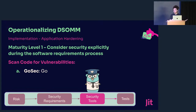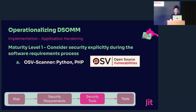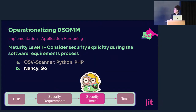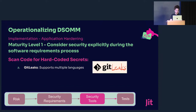Going back to the application hardening sub-dimension: we have the three action items and implement the matching tools. For code scanning for vulnerabilities, we're using Gosec for Go and Semgrep for Python, Java, JavaScript, TypeScript, Kotlin, Scala, and C#. For dependency scanning, we're using OSV Scanner for Python and PHP, Nancy for Go, and npm audit for JavaScript, TypeScript, and Node.js — basically everything JavaScript-based. And for hard-coded secret detection, we're using Gitleaks, which has support for multiple languages.